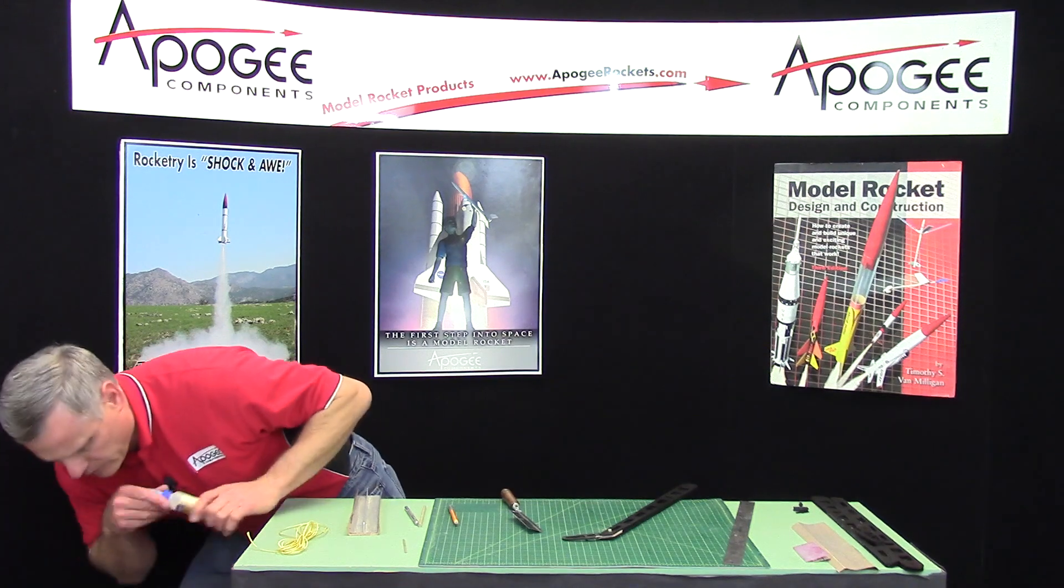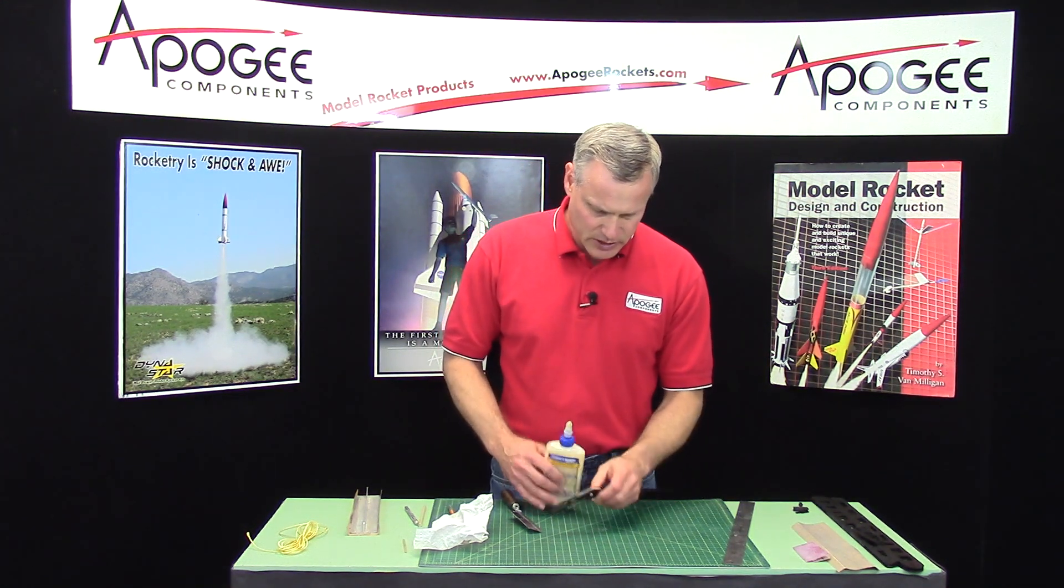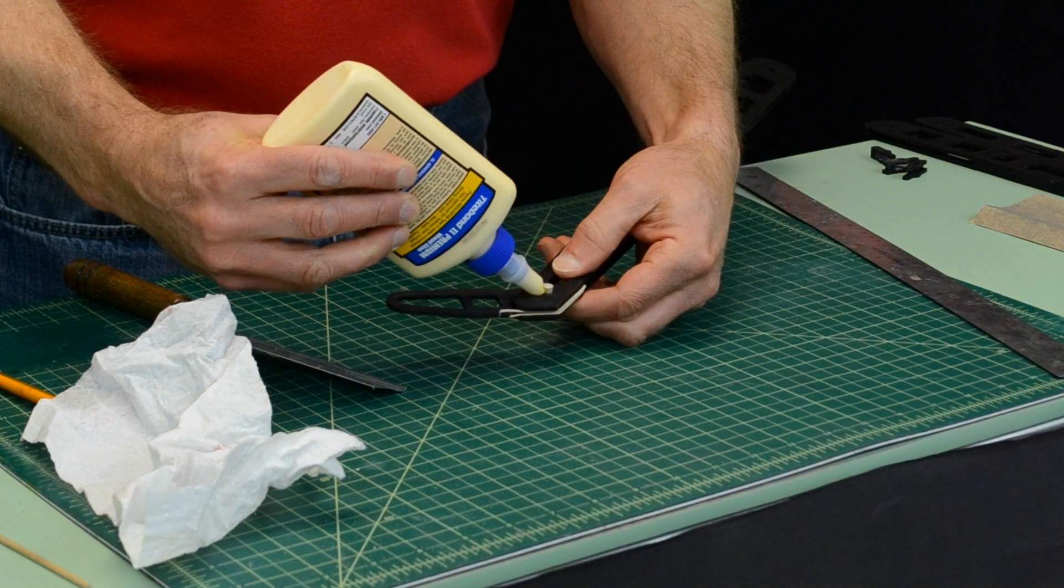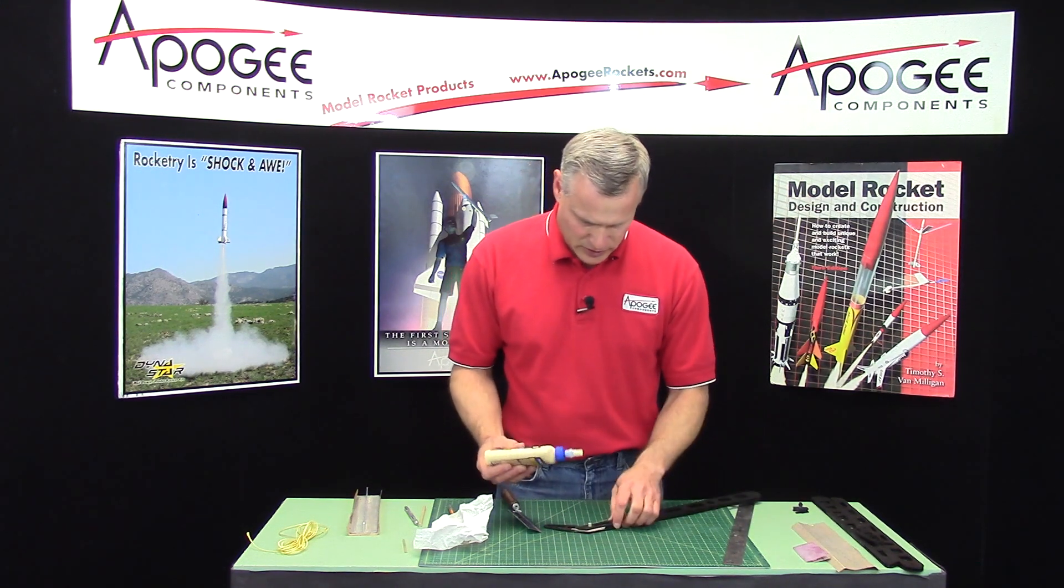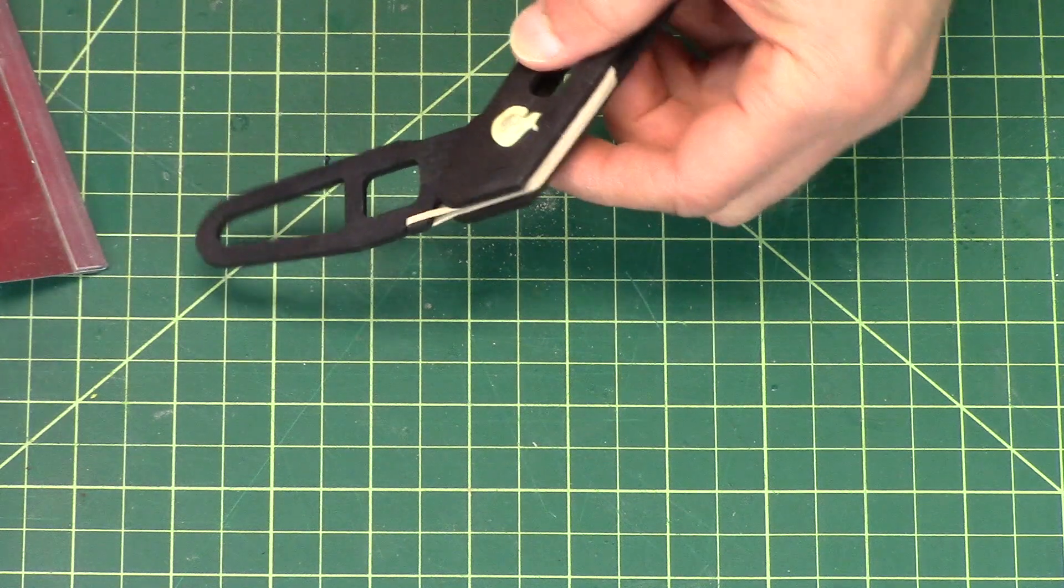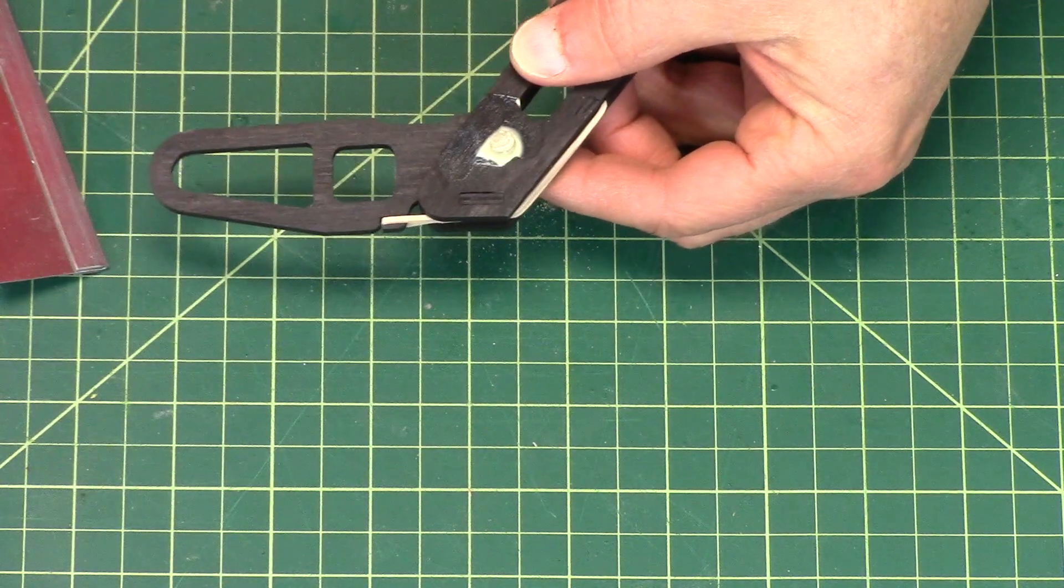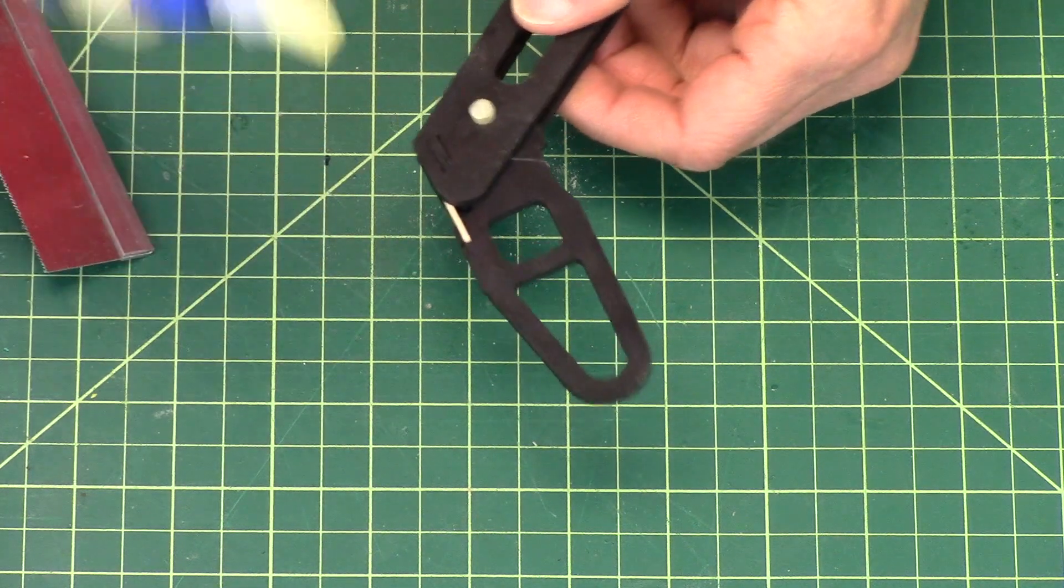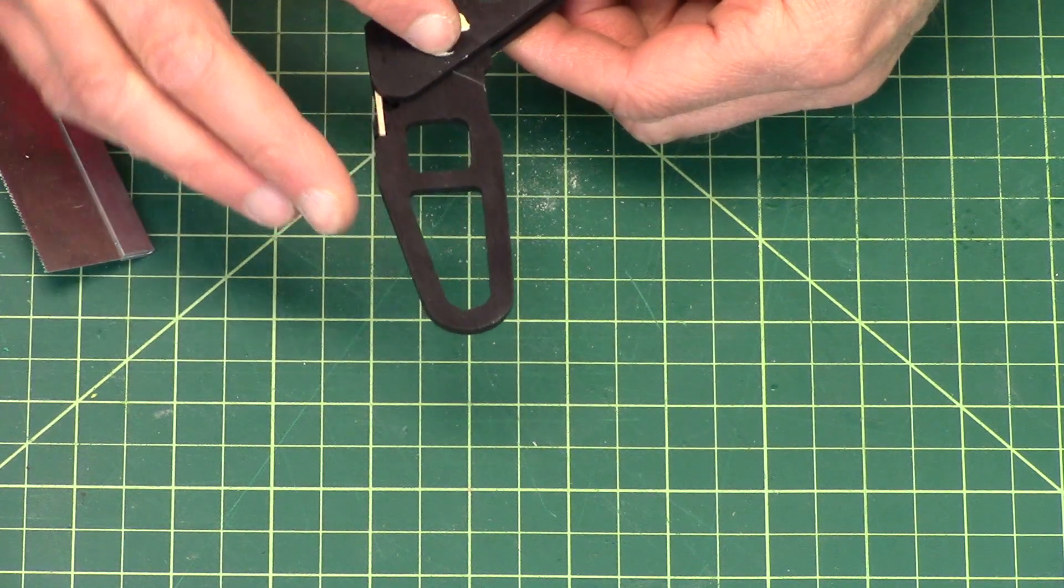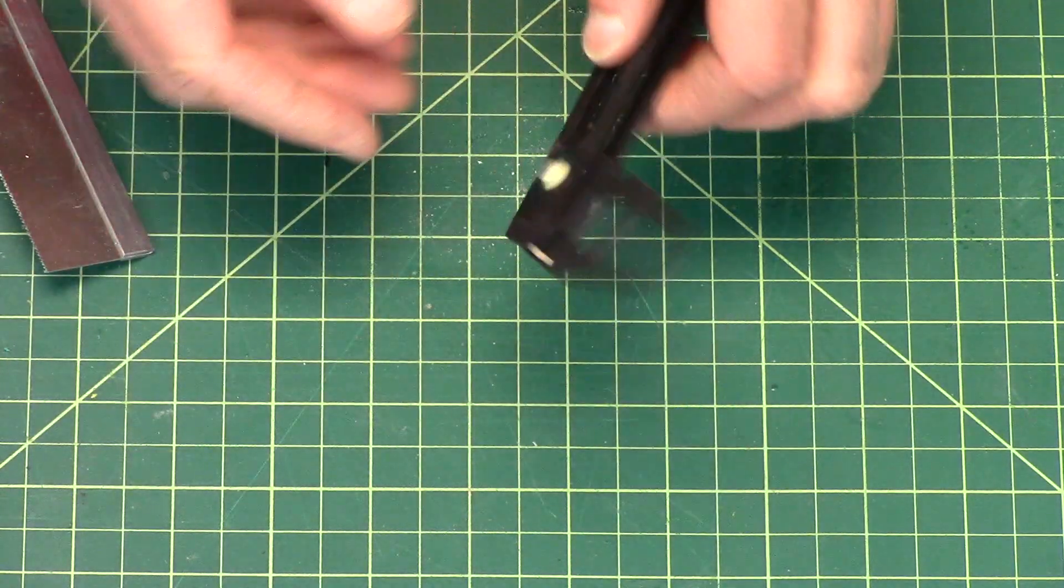And I'm going to get some glue. Paper towel. And we're going to put a fillet of glue on both sides. My glue is clogged. That's way too much glue, so I'm going to wipe it off. Okay, so that's, we're going to let that dry.